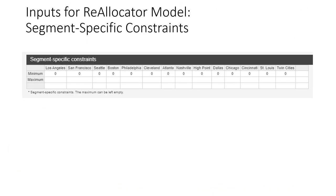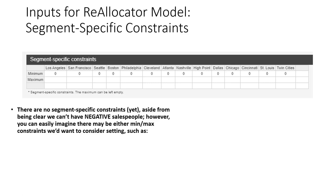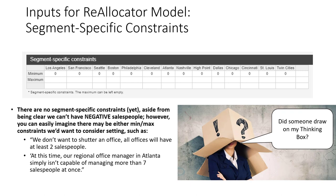In InGenius, we can also add segment-specific constraints to our model, setting a minimum or maximum number of salespeople required in a given region. This is the table we would adjust to tell InGenius to maximize profitability while holding true to particular constraints. At this point, we're not setting any segment-specific constraints aside from requiring no fewer than zero salespeople in a market, though we'll want to adjust these in the future to test practical managerial considerations.